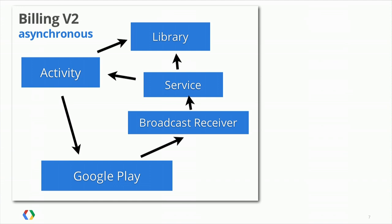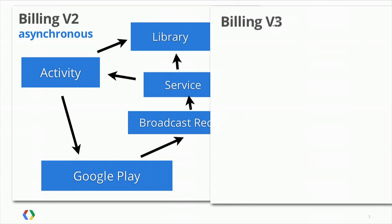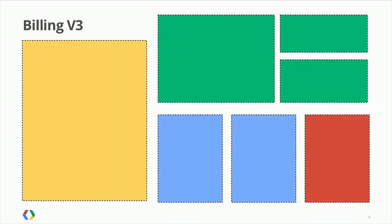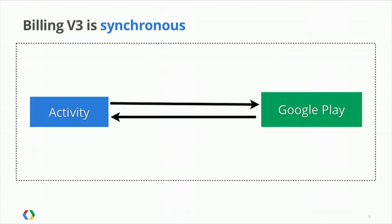In comparison, this is what the v3 diagram looks like — actually, let's make it a full slide. The diagram for v3 is much simpler. The main improvement in v3 is that API calls are now synchronous. This means that your application gets a response right away. So if I want to buy something like 50 gold coins, all I have to do is make a request that says 'buy 50 gold coins.' Then if Google Play thinks the purchase is OK, it's going to return something intuitive, like 'OK,' and you get that response right away.